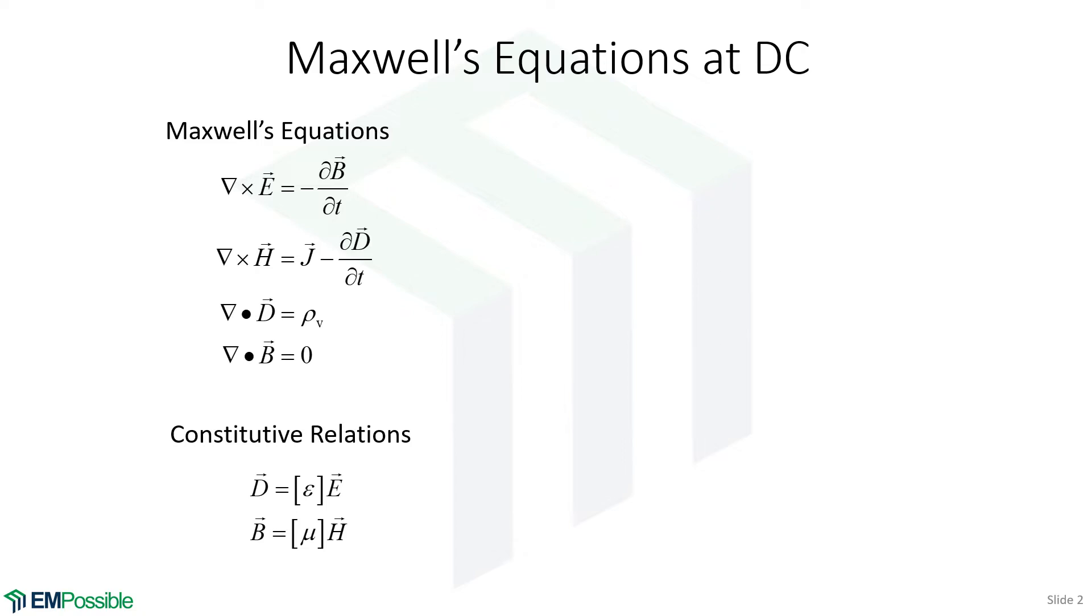We're talking about magnetostatics, so it's statics. Nothing is changing with respect to time. So any derivatives with respect to time would be set to zero, or any frequency terms set to zero. So on Maxwell's equations, we cross off those time derivatives.